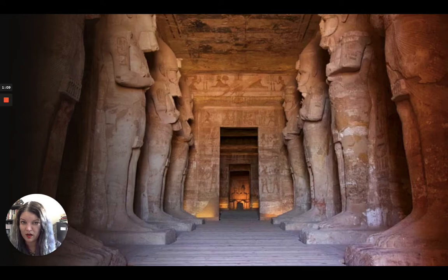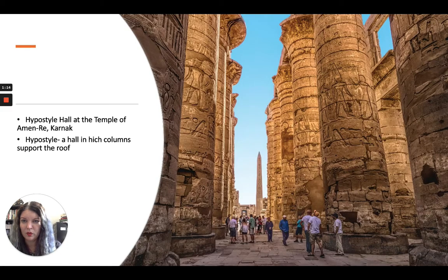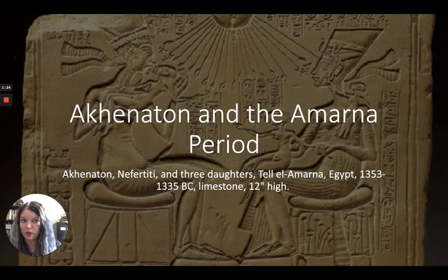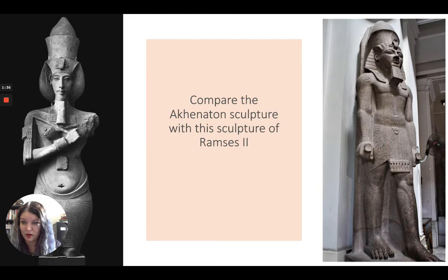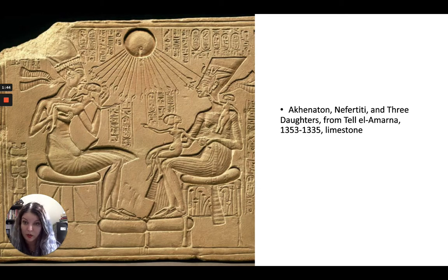We covered Ramses II, the warrior king, and then we got into the hypostyle halls — the halls held up by giant columns. We looked at some examples of painting, and then we ended up with Akhenaton and the Amarna period, discussing Akhenaton, his wife Nefertiti, his mother Tiy, who were all important figures, and all of the vast cultural changes they brought about, including the change in religion.